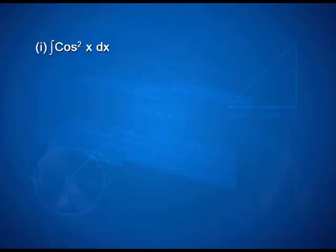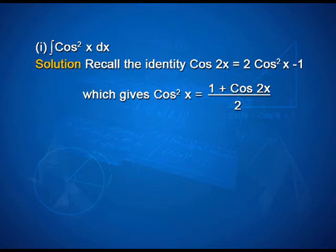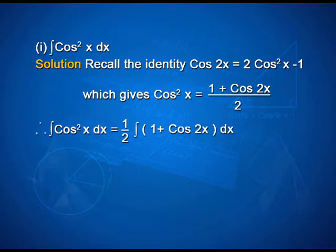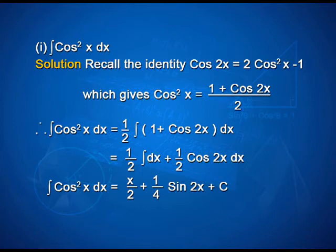Now let us look at integration using trigonometric identities. When the integral involves some trigonometric functions, we use some known identities to find the integral as illustrated through the following examples. Example 1: find ∫cos²x dx. To calculate the integral, we recall the identity cos 2x = 2cos²x − 1, which gives cos²x = (1 + cos 2x)/2. Therefore, ∫cos²x dx = (1/2)∫(1 + cos 2x) dx, that is equal to (1/2)∫dx + (1/2)∫cos 2x dx. Therefore, ∫cos²x dx = x/2 + (1/4)sin 2x + c.